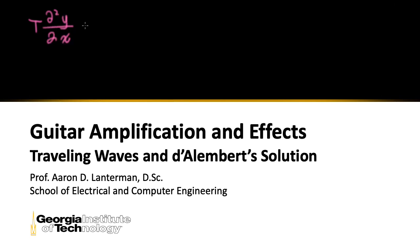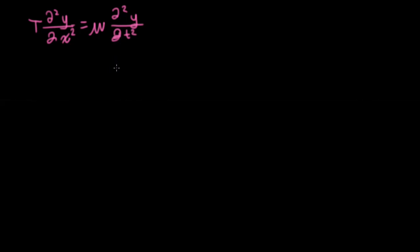We've been spending the last several lectures looking at solutions to the wave equation. Y represented a displacement of a guitar string perpendicular to the length of the string, so we have a double derivative in the spatial component on the left and a double derivative in the time component on the right. T is the tension of the string, and mu is the mass per unit length.